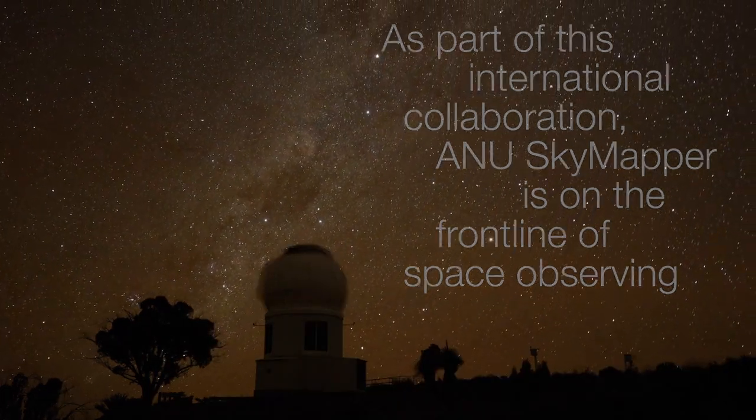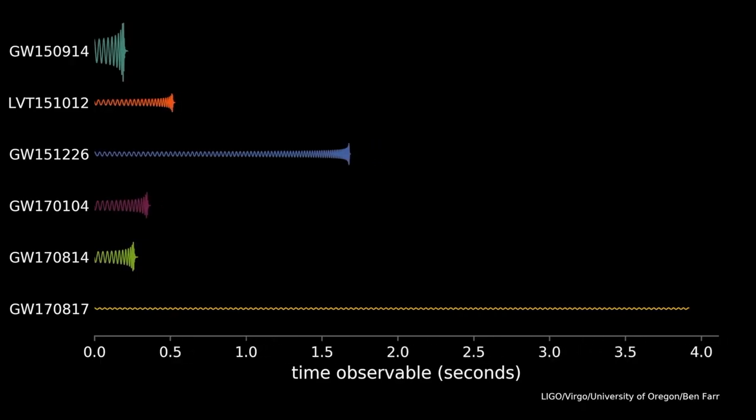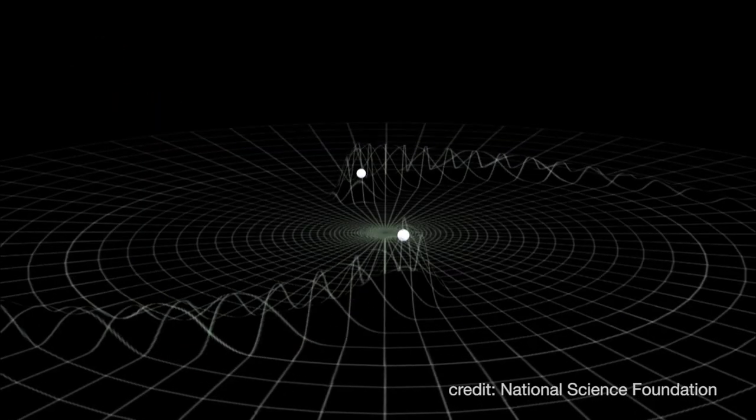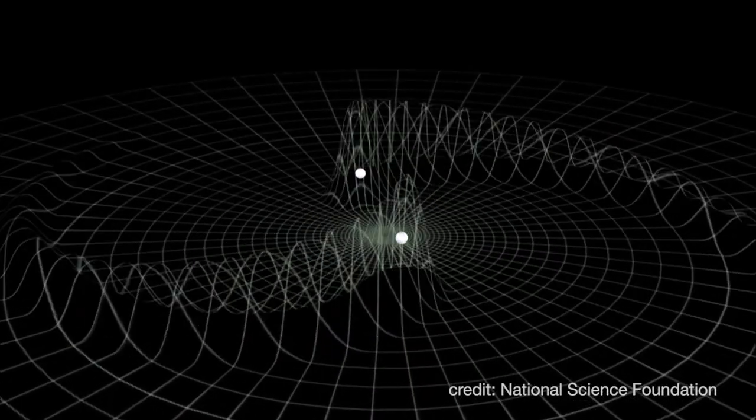SkyMapper is a 1.3 metre diameter telescope that has a very wide field of view. When LIGO detects an object, it can't localize the position of the source of the gravitational waves with a great deal of accuracy.